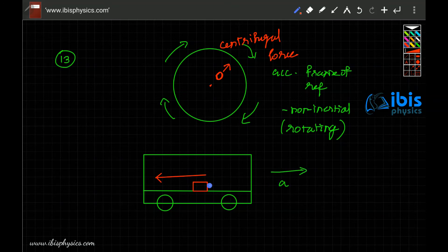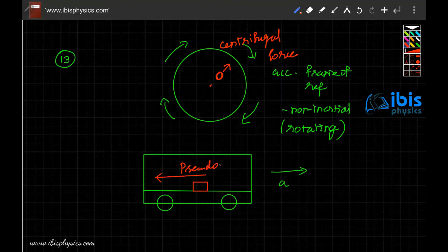We call this centrifugal force. In the bus case, the bus is going with constant acceleration and the object slides backward, but we are not directly applying any force on this mass. Some force appears to be acting, causing it to slide backward. The force responsible for making this object slide is called pseudo force.